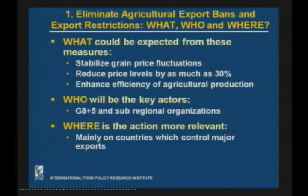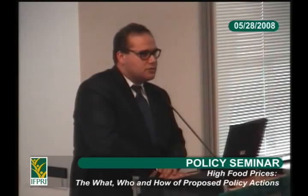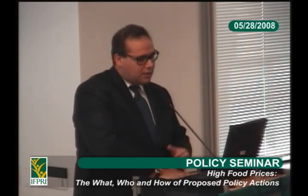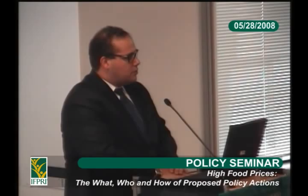At the very least, export trade for humanitarian purposes should be reopened now, even before the forum is convened. What could be expected from these measures? They will stabilize grain price fluctuations and reduce price levels by as much as 30% as simulated, and enhance efficiency of agricultural production. The key actors would be the G8 plus the five and subregional organizations. The action is most relevant in the countries which control the major export shares, and there are already some efforts in some regions trying to create coordination on this topic.